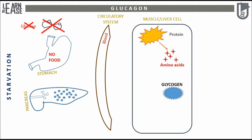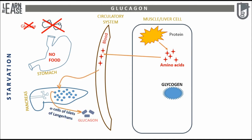This will cause the release of free amino acids, which will enter into the blood. A spike in the free amino acids in blood is sensed by alpha cells of islets of Langerhans, and they will release glucagon, which will enter the blood.